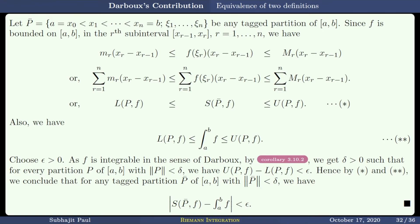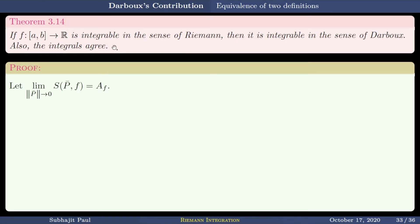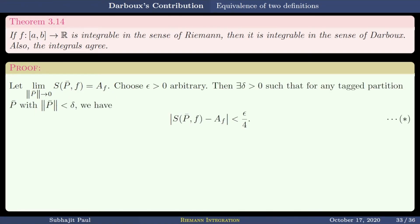Next is Riemann implies Darboux. If F is integrable in the sense of Riemann, it is also integrable in the sense of Darboux and the integrals agree. So assume the limit as norm P-bar tends to 0 of the Riemann sum SP-bar(AF) equals AF. Choose epsilon positive. Then there exists a delta positive such that for any tagged partition P-bar with norm less than delta, |SP-bar(AF) − AF| < epsilon/4.